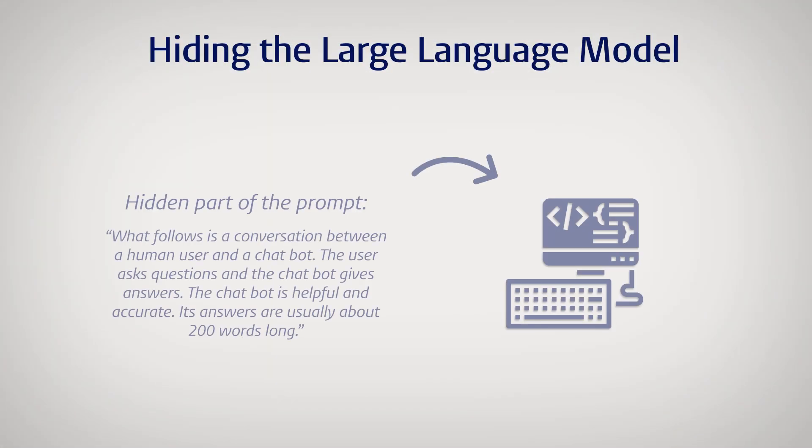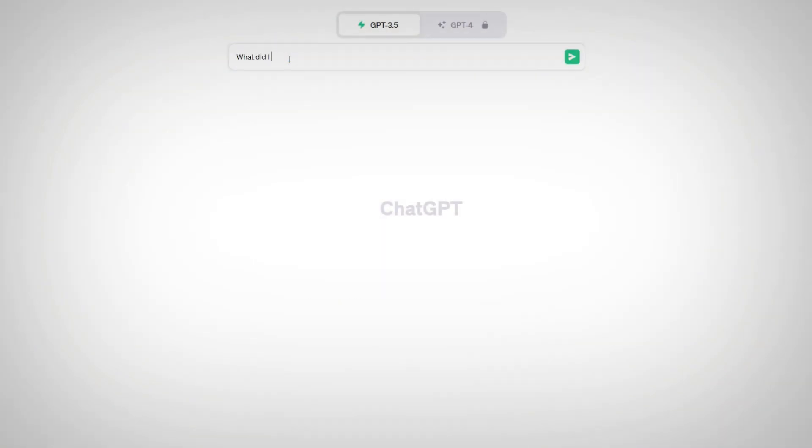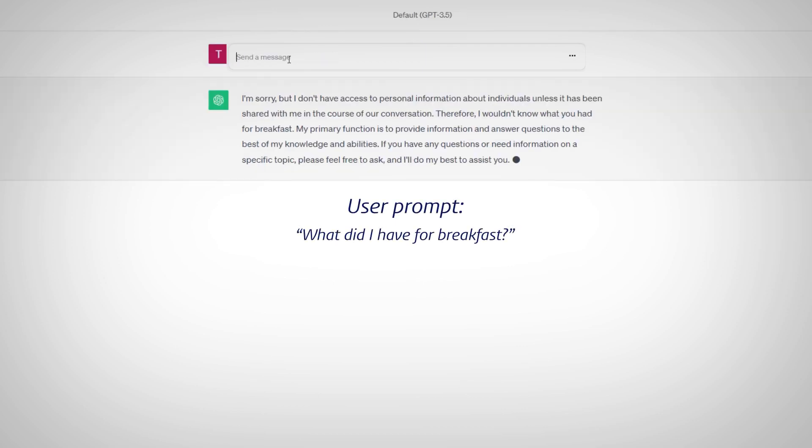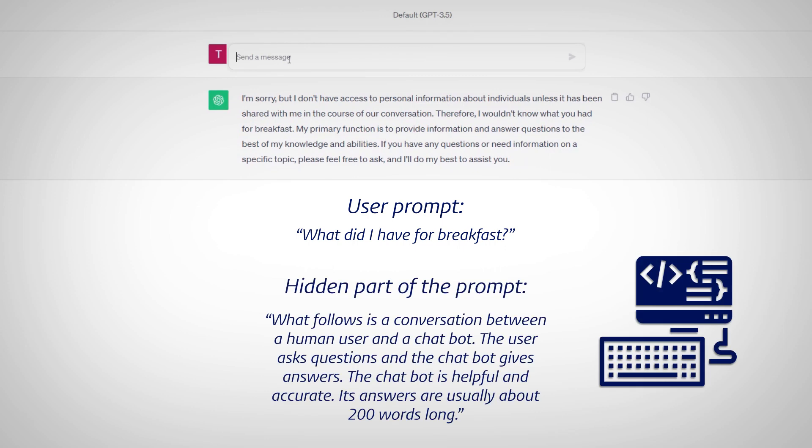Now how do you make a text prediction program generate texts that are helpful and accurate answers to questions posed by a human? Well here's what you do. You give it a text that starts like this. What follows is a conversation between a human user and a chatbot. The user asks questions and the chatbot gives answers. The chatbot is helpful and accurate. Its answers are usually about 200 words long. When you have a session with ChatGPT you only see your questions and its answers. But there's also a lot of text involved that you don't see but that the underlying LLM does see. And that hidden text in effect tells the LLM to predict what would happen next in a text about a human and a helpful chatbot. And that's why ChatGPT sounds like a helpful chatbot. It is predicting what a helpful chatbot would sound like.